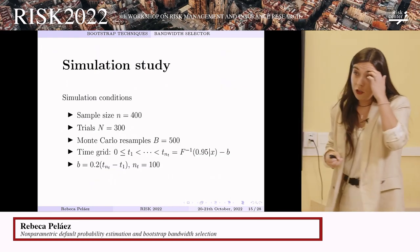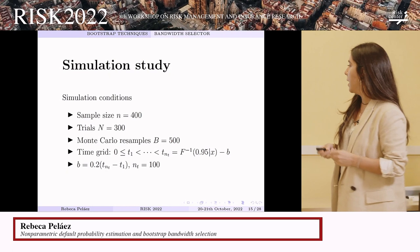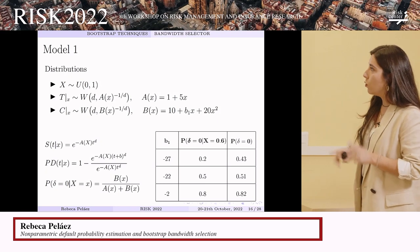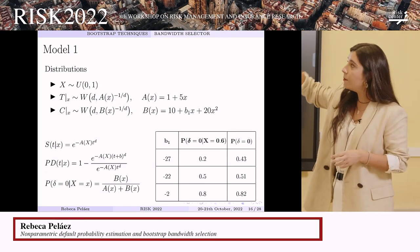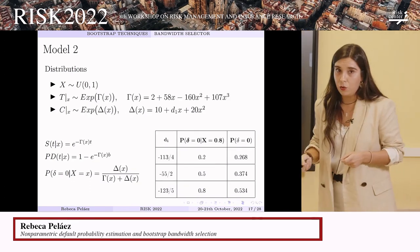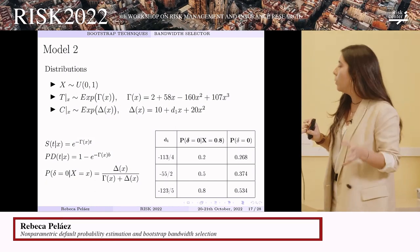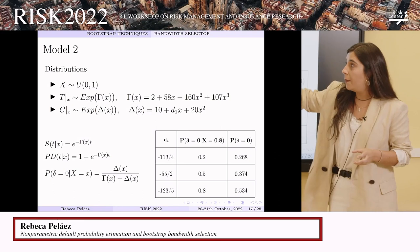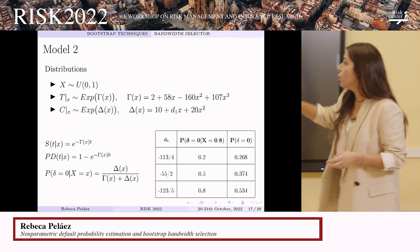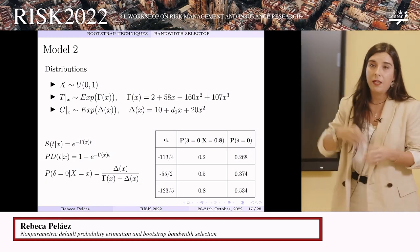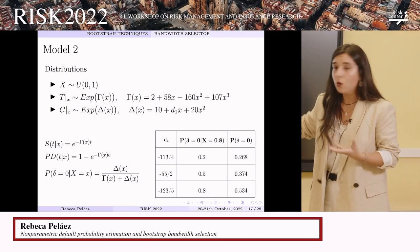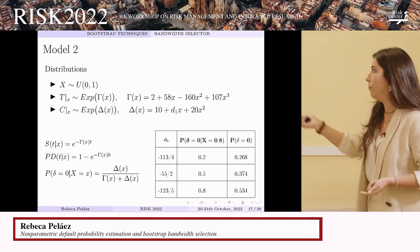So we use the bootstrap approximation — the bootstrap version of the mean integrated square error. Since we don't know the distribution of this bootstrap MISE, we minimize a Monte Carlo approximation of the bootstrap MISE to obtain the bootstrap bandwidths. We carried out a simulation study to analyze the behavior of these techniques, considering two models: one with Weibull distributions for the times and uniform distributions for the credit scoring variable x, and a second model with exponential distributions. We considered different censoring levels to compare the behavior of the techniques.